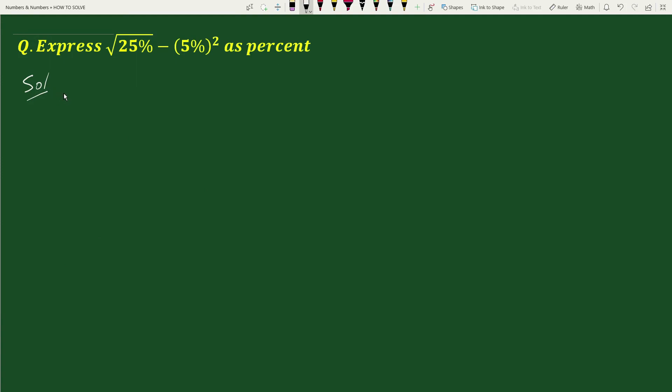let us first copy down the expression square root of 25% minus 5% whole square. Our first step will be to change the percent to decimal number.